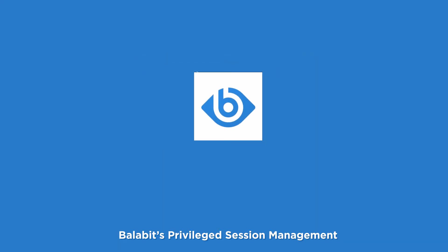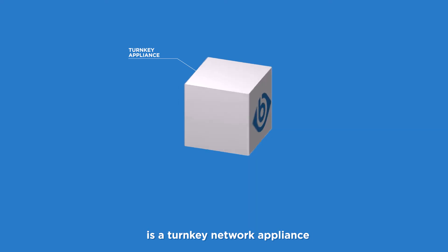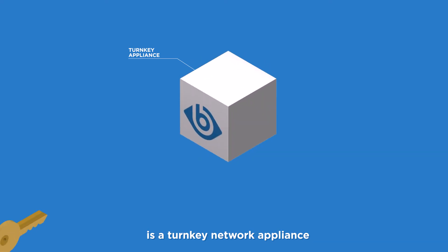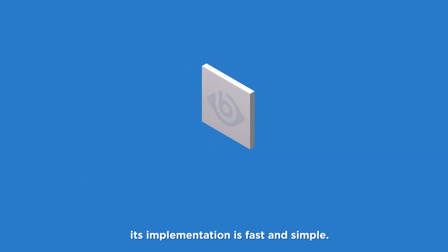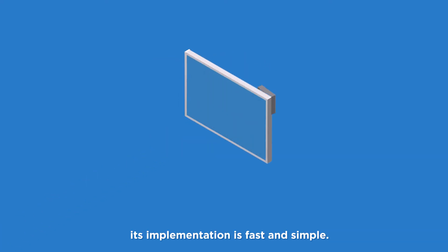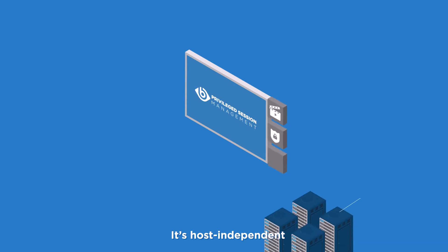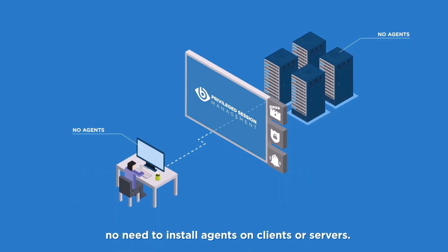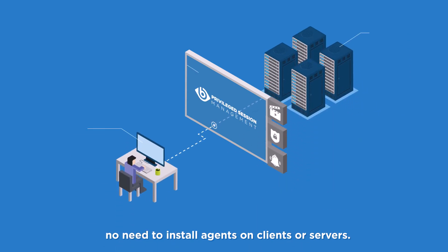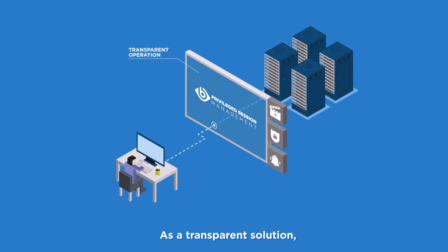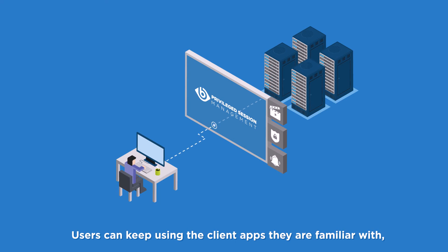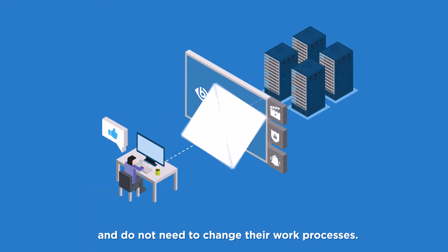Balabit's Privileged Session Management is a turnkey network appliance. Its implementation is fast and simple. It is host-independent — no need to install agents on clients or servers. As a transparent solution, it requires minimal change to your network. Users can keep using the client apps they are familiar with and do not need to change their work processes.